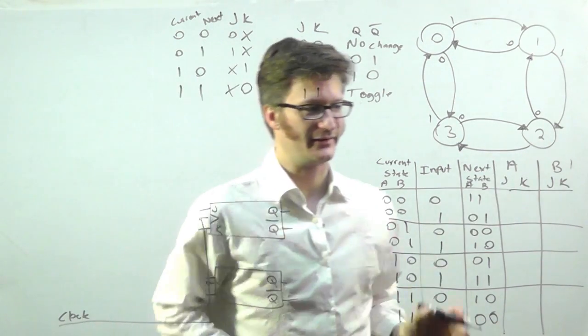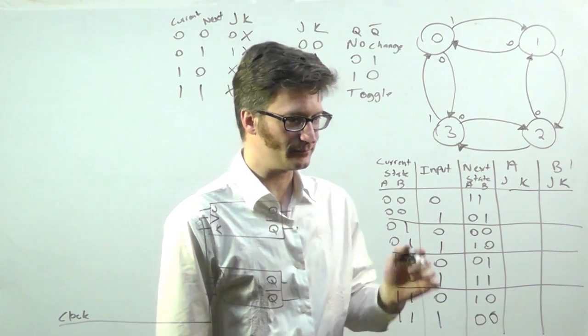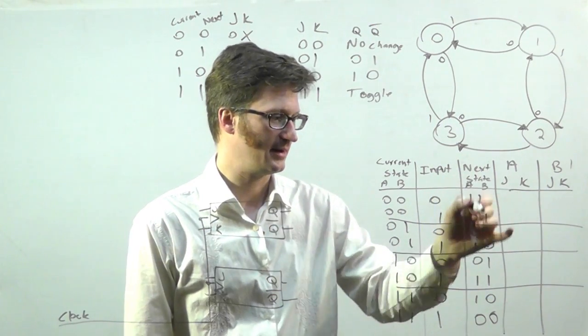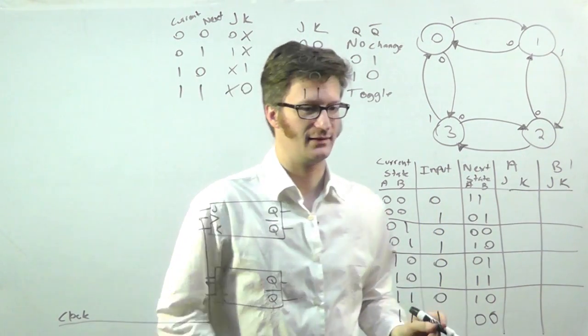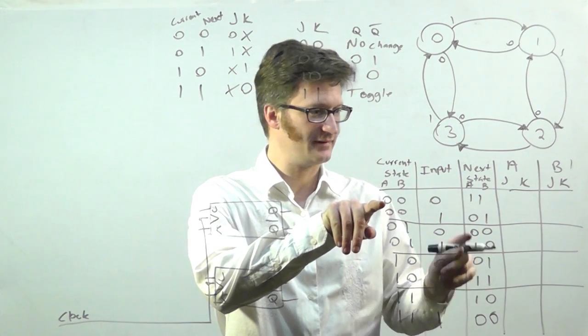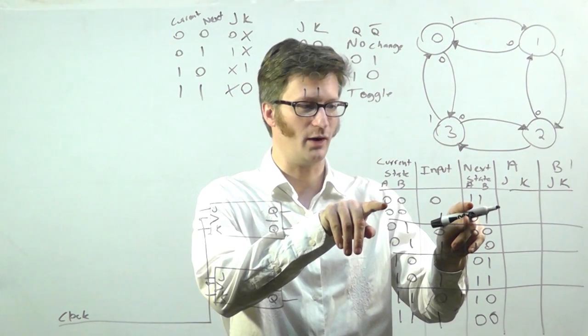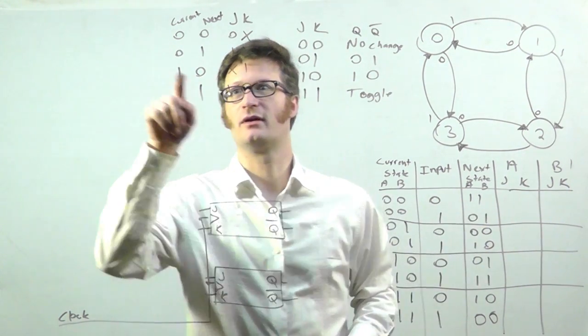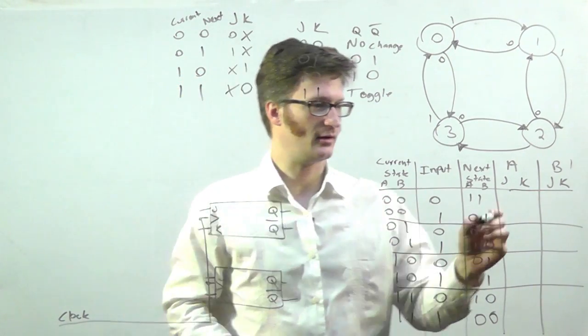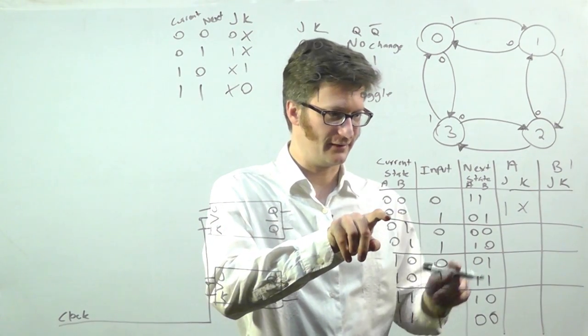If we get over to my state table, I've added two columns here for A and B. This here is A, this is B for my current state, and A and B for my next state. So, here we go, we see for this state, it is a zero. On the next one, it needs to be a one. So, we go over to here, it's a zero and one. So, I put one and X here.